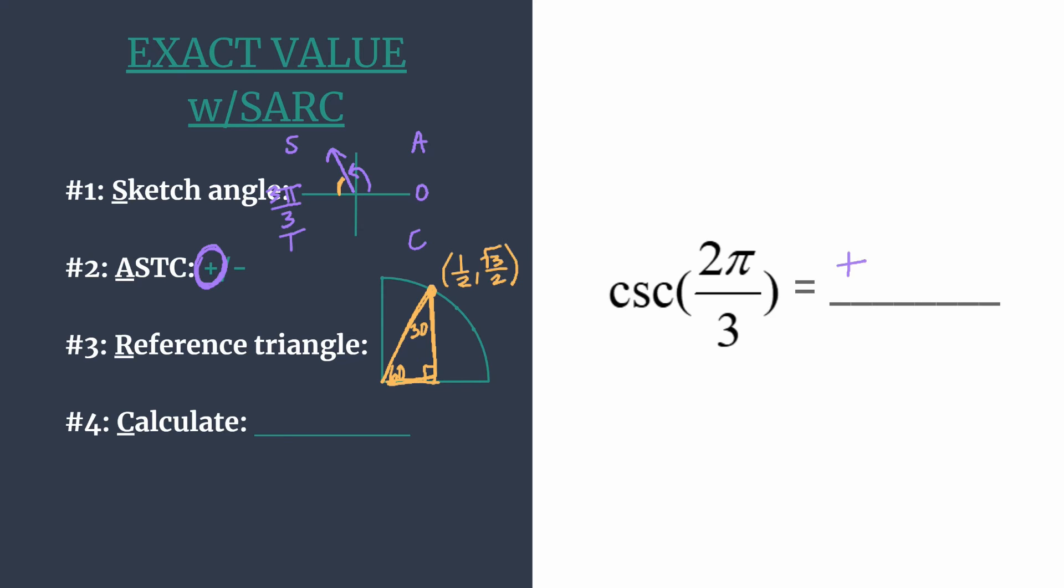We know that the cosecant of an angle is found on the unit circle simply with 1 over y because we know sine on the unit circle is the y-coordinate. All we need to do is find the reciprocal of our y-coordinate. So take root 3 over 2 and flip it. So it's 2 over square root 3.